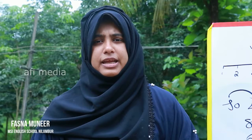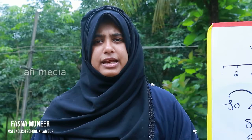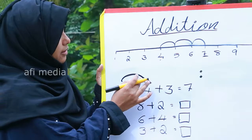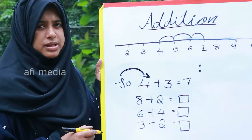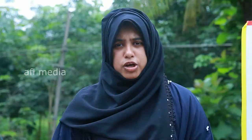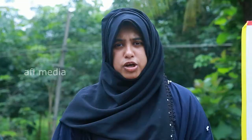Remember, dear students: when we add on the number line, we skip like this. When adding numbers on the number line, you draw a skip line like this. Always remember that when adding numbers on a number line, you draw the arc like this. Next, we want to find out addition by counting forward.